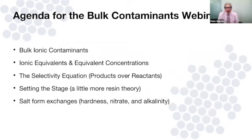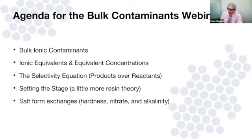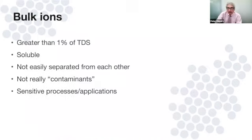The agenda: we're going to talk about bulk ionic contaminants, equivalents and equivalent concentrations. I'm going to introduce a selectivity equation and show some examples but not go through any of the math — if enough of you are interested in the math, we'll put a separate webinar on for that. Just remember the selectivity equation is products over reactants. We'll set the stage with a little more resin theory, then talk about three of the most common salt-form bulk ion exchanges: hardness, nitrate, and alkalinity.